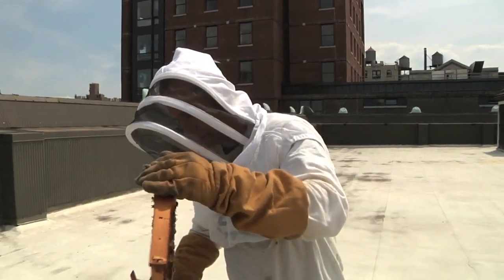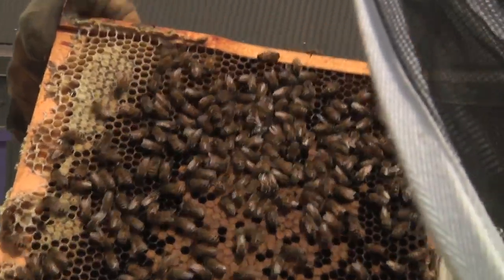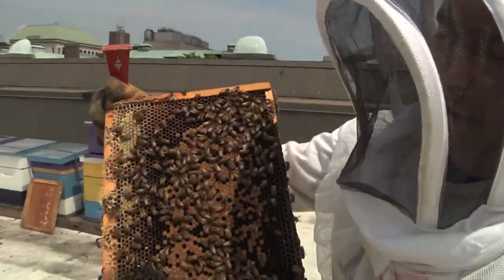We're really dependent on bees for pollinating a large group of crops that we rely on for food. A lot of the things like blueberries, peaches, apples would really not exist at the levels that we have now if we didn't have bees to pollinate those crops.